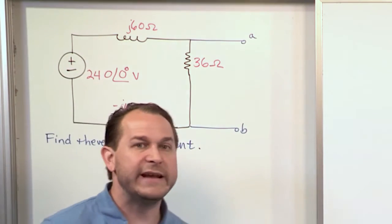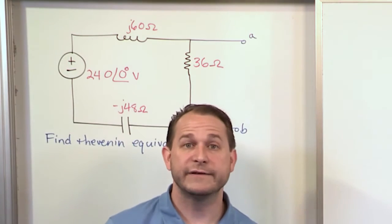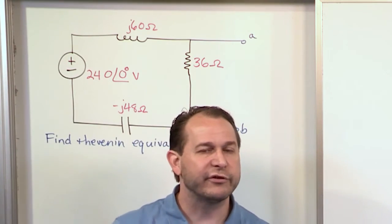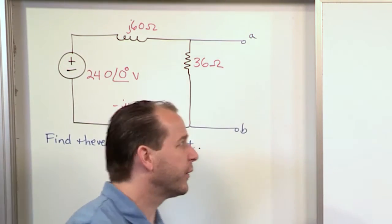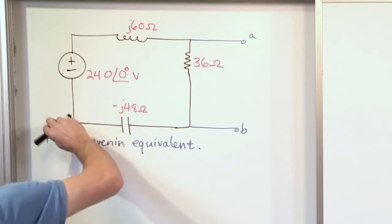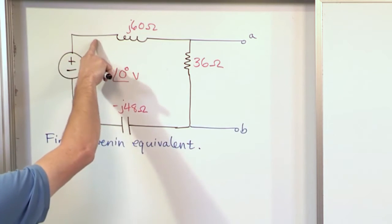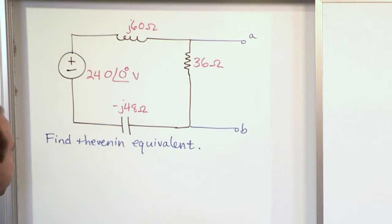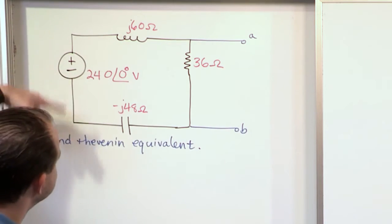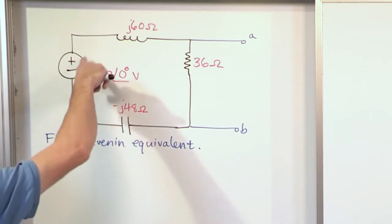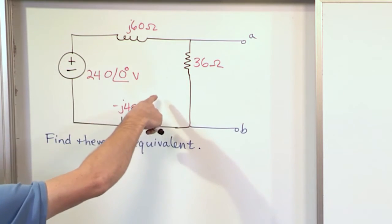The current is going to come out of the source and go this way. Now again, we're in the AC, cosine type of problems. We know that the source is really oscillating back and forth. That means the current's going up and down like this. But for the purpose of visualization, we visualize the current coming out of the positive terminal just like DC sources, even though we know that it's really oscillating back and forth.